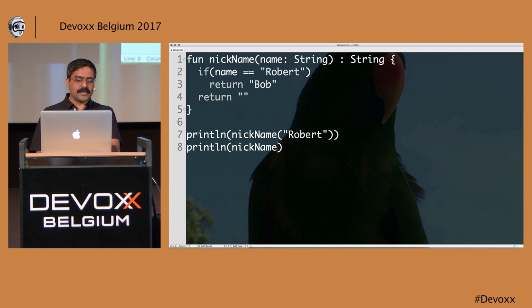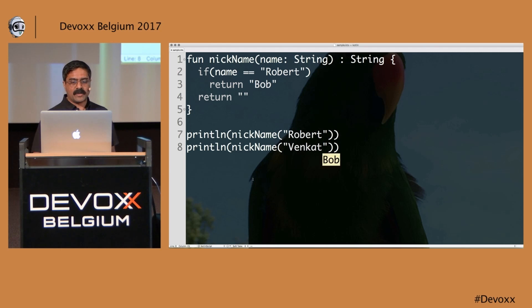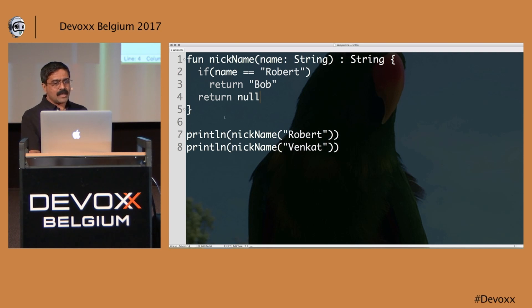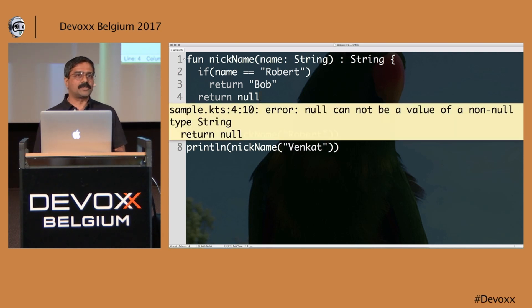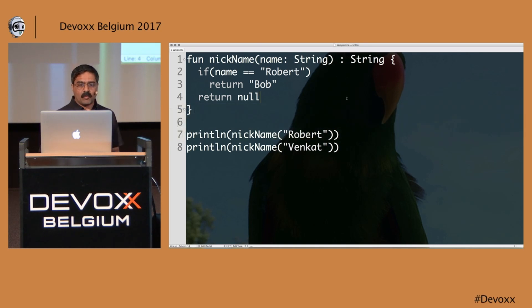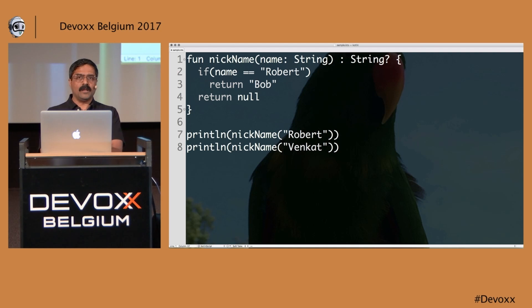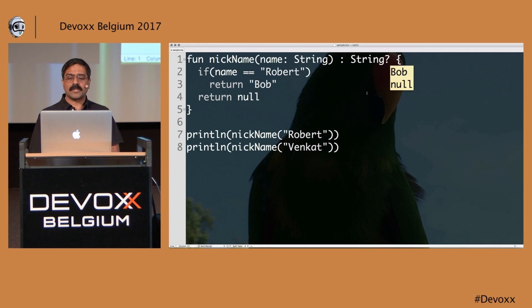When I try to return null from a function declared as returning String, the code refuses to compile. You cannot return null anywhere you want to — this is borrowed from C#. C# has nullable types, and we can use that in Kotlin elegantly. If you really think you're going to return null, put a question mark after the type — that becomes a nullable type. Now you can return null values.